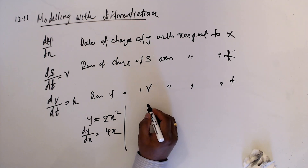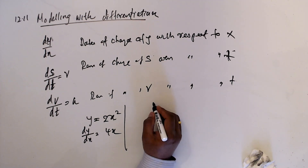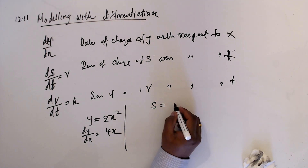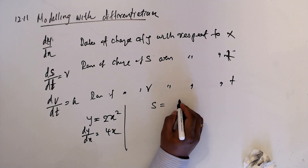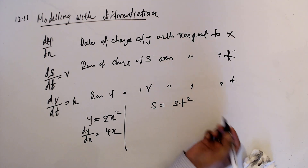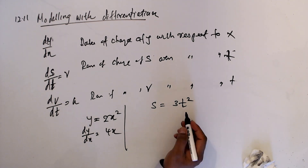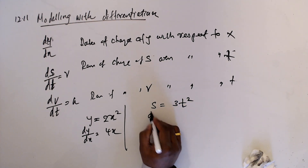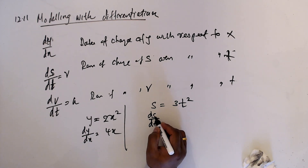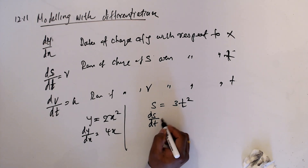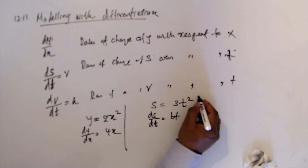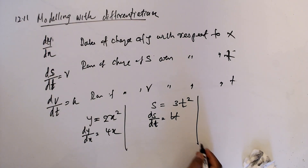If we have a relationship like x = 3t², then we can find ds/dt — the rate of change of displacement with respect to time — which gives 6t.